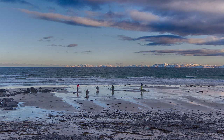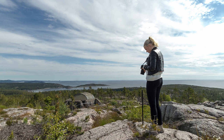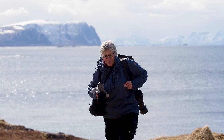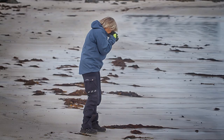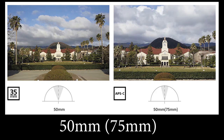50mm lenses are also called normal lenses. Note, this is on a full frame camera. A normal lens is a lens that reproduces a field of view that appears natural to a human observer. In contrast, depth compression and expansion with shorter or longer focal lengths introduce noticeable, and sometimes disturbing, distortion. Here you see a 50mm lens on two cameras with different sensors. The left is full frame and the right APS-C. Note that the smaller of these sensors is much larger than the one on the Nikon P1000, so the difference would be much greater compared to that camera.